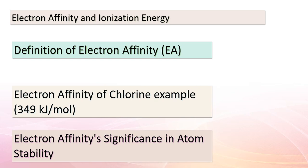Electron affinity is the energy change that occurs when an atom gains an electron. For chlorine, when the atom gains an electron it becomes a chloride ion, releasing energy — the electron affinity is −349 kJ/mol. The more negative the electron affinity, the more likely an atom is to accept an electron and form a stable ion. Ionization energy, on the other hand, is the energy required to remove an electron. Think of it as a tug of war between an atom and its electrons — these two concepts are intertwined and essential to our understanding of atomic behavior.